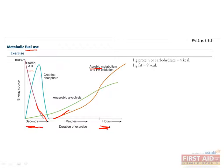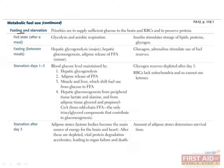Stored glucose is conserved until you really need it, such as when you're sprinting for the finish line. In fasting and starvation scenarios, the priorities are to supply enough glucose to the brain and red blood cells so the body can maintain basic functions, and to preserve protein to prevent muscle breakdown.